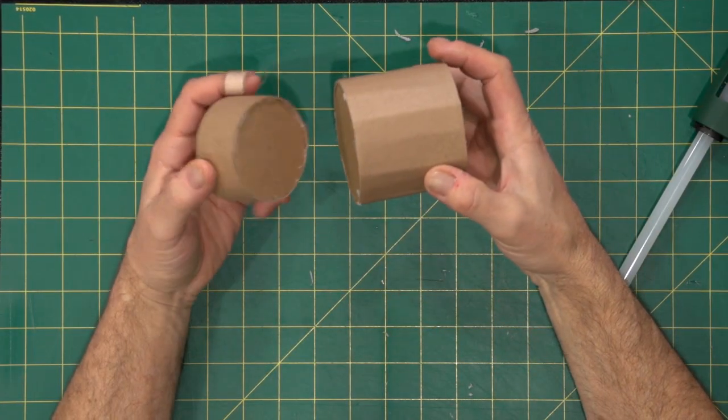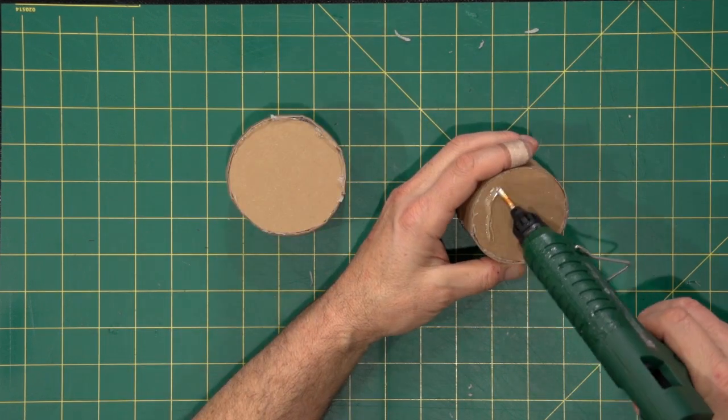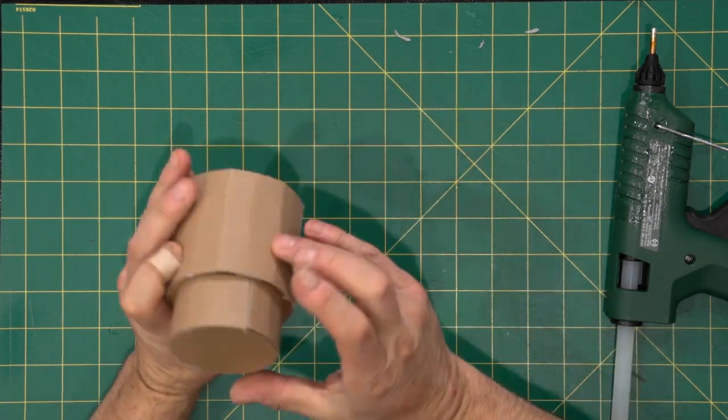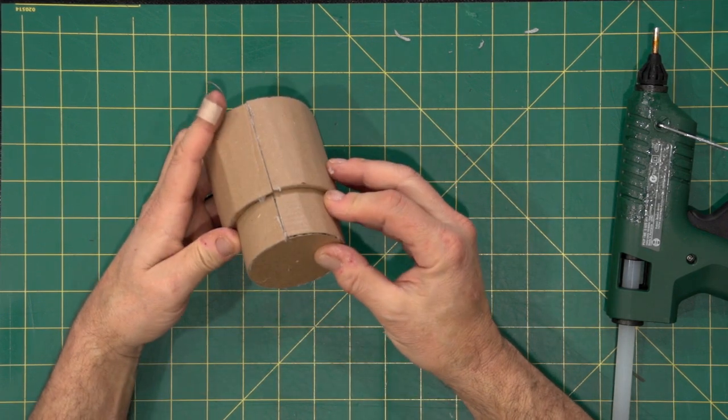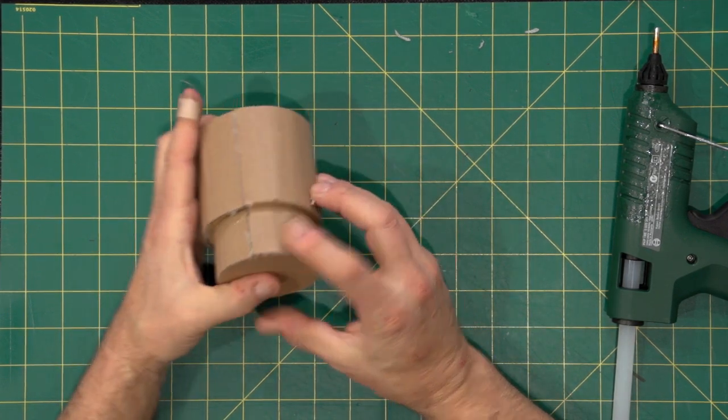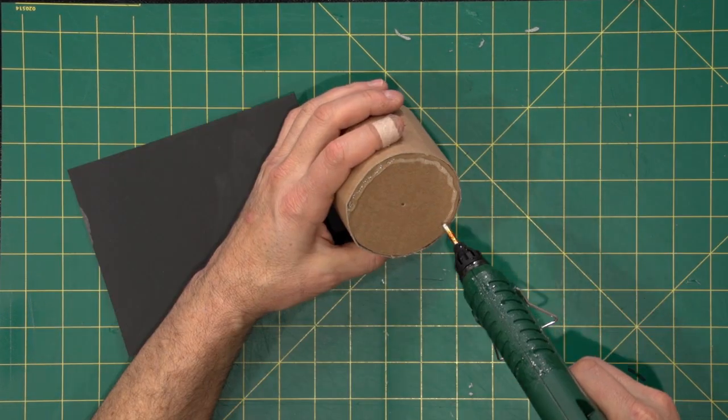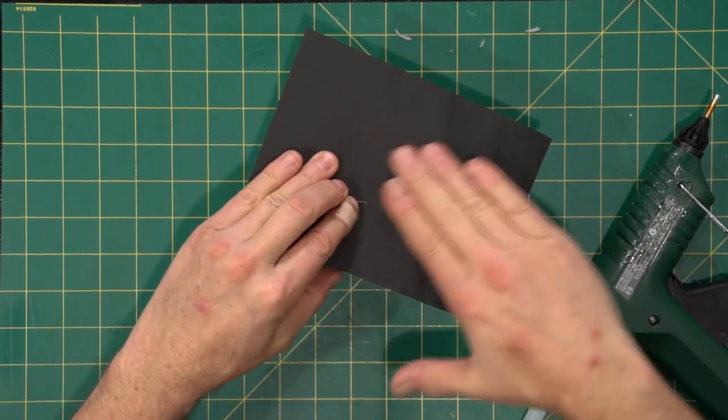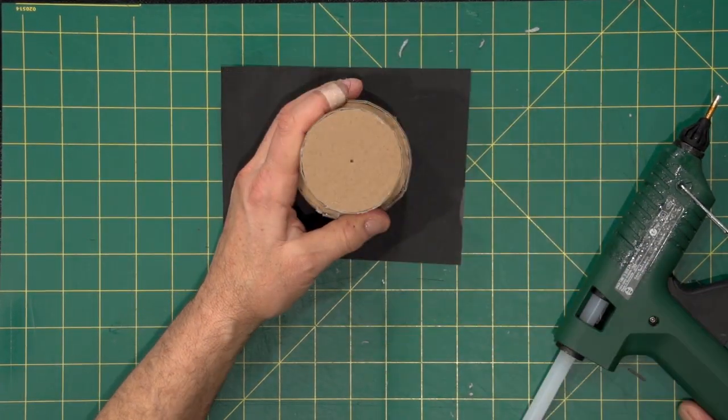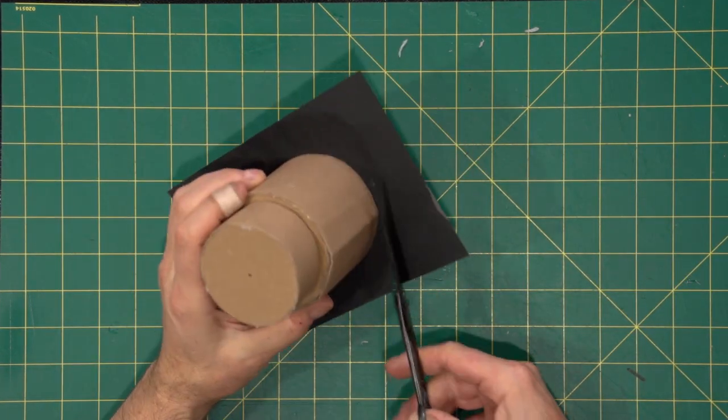Once you've got both barrels finished, simply glue them together. Make sure that the two seams line up, because we can tuck those away underneath later when we come to assemble the camera. I find putting a piece of black cardboard on the front just finishes it off. Easiest way to do that is to glue a bit of cardboard on the front and just trim off the excess.